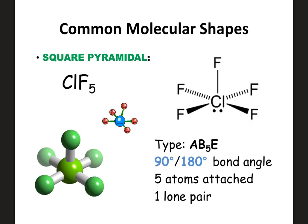Still at five attached, but now one lone pair on the center — this forms square pyramidal. Because of the lone pair on the center, the atoms on the bottom part flatten out. The bottom is completely square and sits flat, but you have one atom coming out the top. That's how the valence electrons get as far apart as possible. Multiple bond angles here, so don't worry too much about them, but know: five attached, one lone pair on the center — square pyramidal.